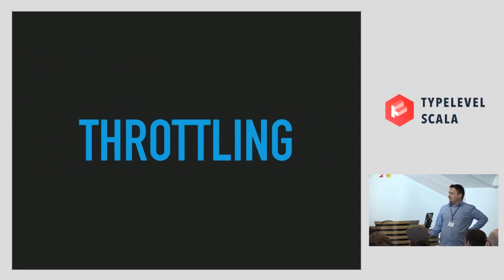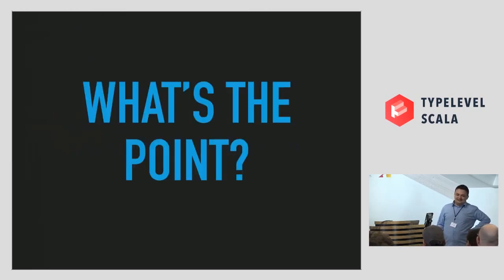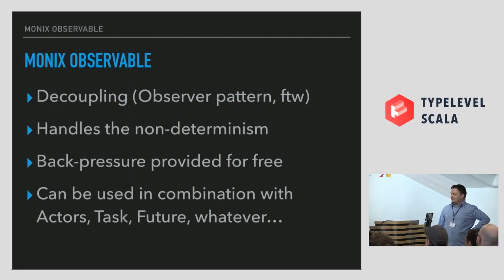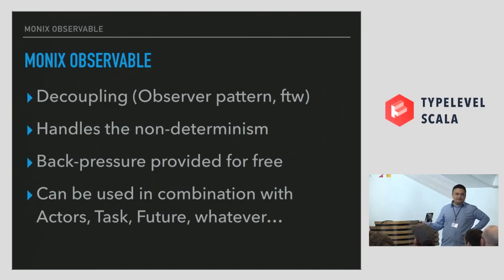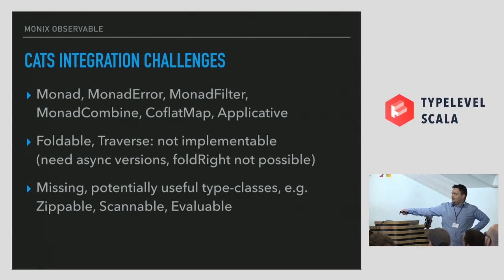Monix Observable handles decoupling. I underestimated the length of my talk. The point is: Monix Observable handles extreme decoupling and non-determinism because it's the Observable pattern — about decoupling, and Observable is an Observer on steroids. It handles non-determinism and back pressure for free, and can be used in combination with actors. Integration with cats is in progress. The type classes covered are the ones shown here. Foldable and Traverse unfortunately are not applicable because they assume synchronous execution, and there are potentially missing type classes like Zippable, Scannable, and Available.